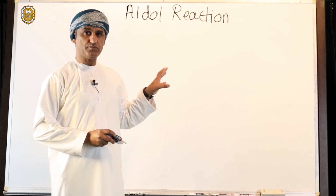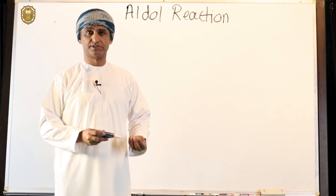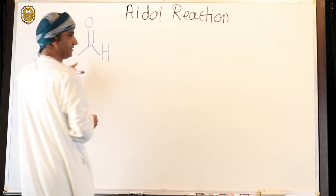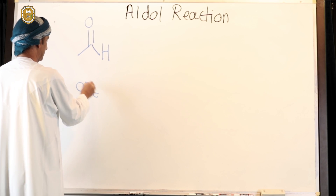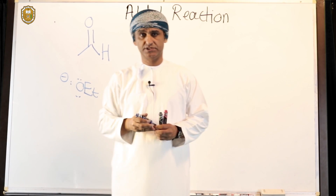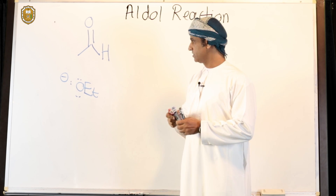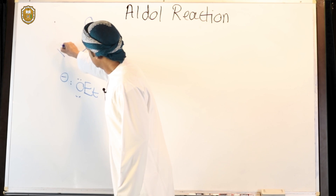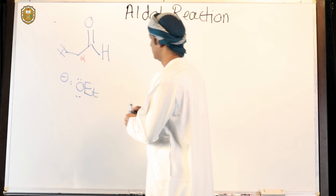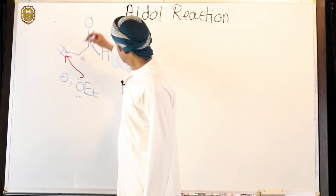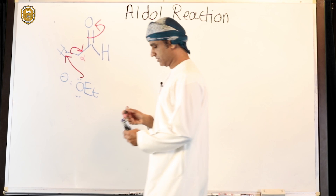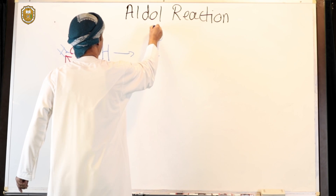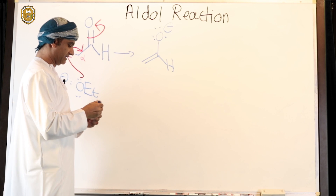Let's draw the structure of acetaldehyde in order to illustrate the traditional aldol reaction again. So this is acetaldehyde. If acetaldehyde is treated with a catalytic amount of ethoxide ion, the ethoxide ion would deprotonate at the alpha position of acetaldehyde, forming the corresponding enolate.